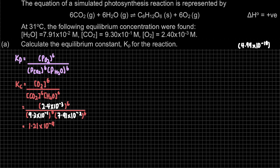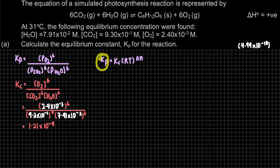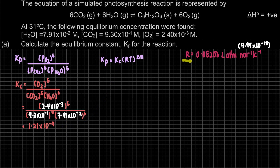The question asks to calculate Kp. Since we know Kc, we can find Kp using the formula: Kp = Kc(RT)^ΔN. Kp is our unknown, Kc is the value we just calculated, and R is the gas constant: 0.08206 L·atm per mol per Kelvin.